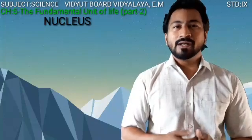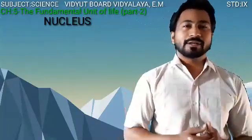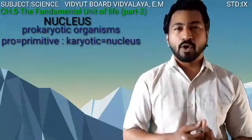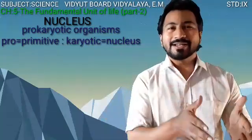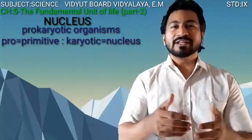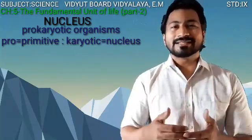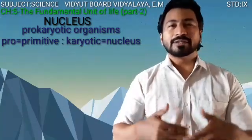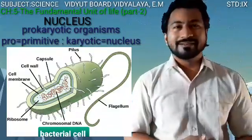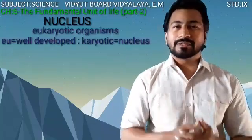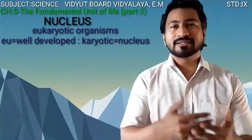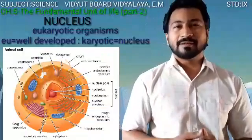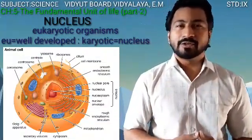Depending on whether the nucleus is well developed or not, there are two types of organisms: prokaryotic and eukaryotic. 'Pro' means primitive and 'karyotic' means nucleus — so if the nucleus is primitive or not well developed, it is prokaryotic. A typical bacterial cell is highly prokaryotic. 'Eu' means well developed and 'karyon' means nucleus — so eukaryotic cells have a well-developed nucleus. Most plant and animal cells are eukaryotic.